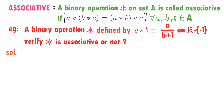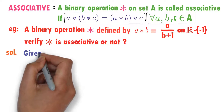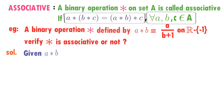Solution to this problem. We are given that A★B — observe the question — what is A★B? A divided by (B+1). I consider A as the first element and B as the second element. A★B is given as first element divided by second element plus 1.